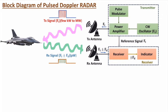The received signal at the receiving antenna will have a frequency of ft plus or minus fd. This signal is in terms of picovolts — pico means 10 to the power minus 12 volts. This deviation in frequency happens based on the motion of the target. If the target is moving towards the radar system, the deviation will be positive. If the target is moving away from the radar system, the deviation will be negative. This signal at frequency ft ± fd is received by the receiving antenna and given to the receiver circuit.